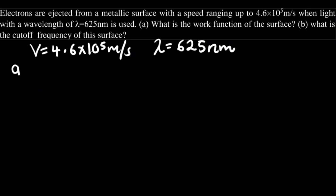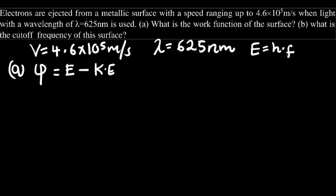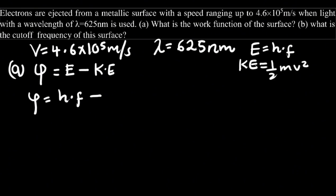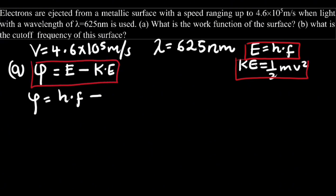Now, what is the work function? The work done is equal to the photon's energy subtracted by the kinetic energy. The photon's energy is equal to Planck's constant multiplied by the frequency. So we have: work done equals Planck's constant times frequency, minus kinetic energy, which equals one half mv squared.